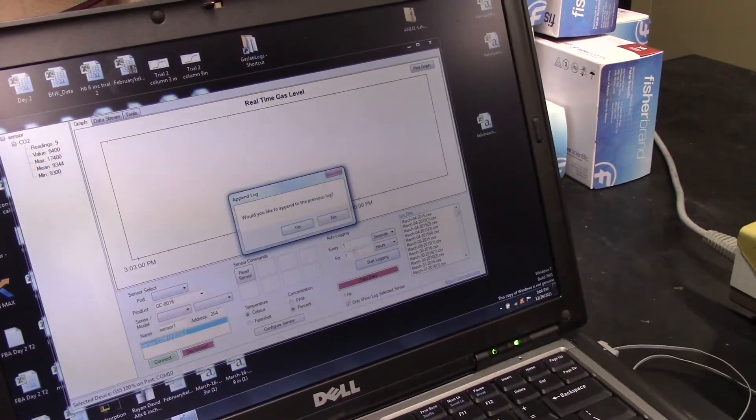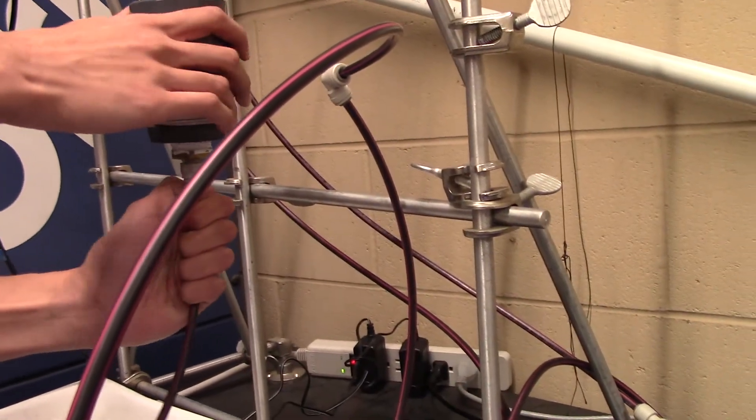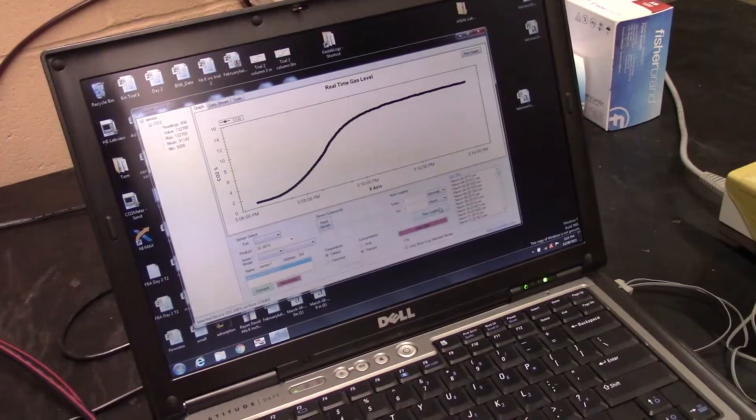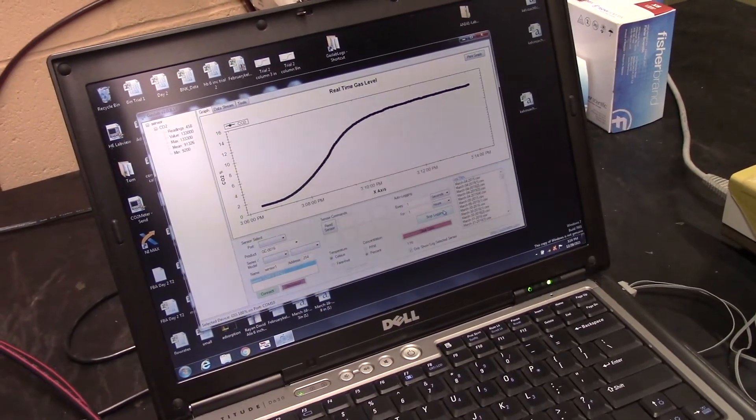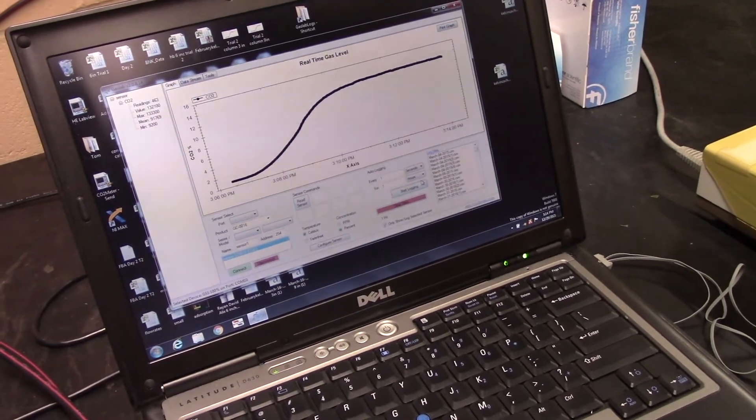In the GasLab software, restart the logging, name the file, hit OK while simultaneously reattaching the bottom tubing to the column to begin collecting adsorption data. Once the concentration reaches a plateau, we can now stop recording data as this indicates that saturation has been achieved.